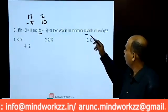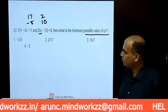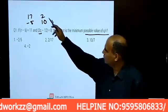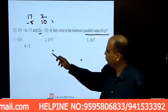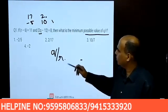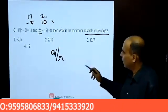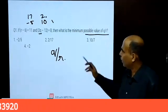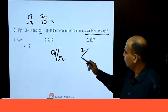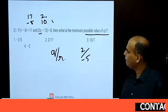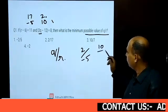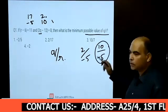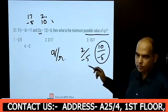So what is the minimum possible value of q by r? To minimize q by r, we minimize the negative value — use r equal to 5 and q equal to 10. This gives a smaller value as the answer.